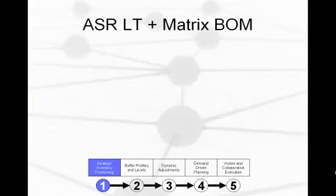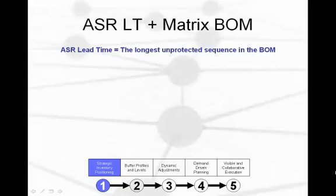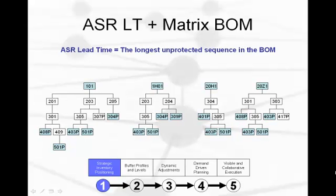One key distinction about DDMRP is its use of something called ASR lead time. ASR lead time is the longest unprotected sequence in the bill of material for a part. Here we have an environment with four unique end items, each with a distinct bill of material. The shaded part numbers are parts that are stocked, including each end item. The lines represent the longest unprotected sequence in each bill of material. It is important to note that this is not the manufacturing lead time, nor is it the cumulative lead time — it is the ASR lead time, and it can shift as different positions in bills are stocked.